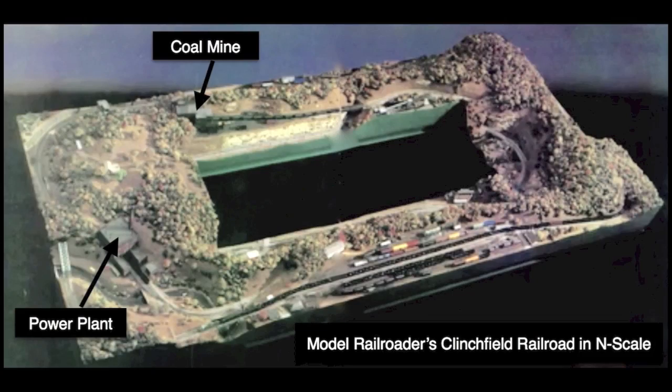To create this illusion, loaded coal cars enter a power plant, pass through the mountain or backdrop, and emerge on the other side as loaded coal cars at the mine. Meanwhile, empties go under the tipple at the mine and reappear on the other side as empties at the power plant. This technique was effectively modeled for the first time in N-scale on Model Railroader's Clinch Field layout back in 1978.